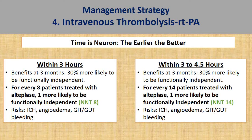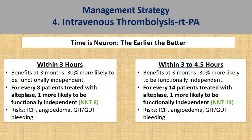This slide echoes the mantra that 'time is neuron' — the earlier the reperfusion treatment, the better the outcome. If patients receive reperfusion treatment within the first three hours, the number needed to treat (NNT) is eight, meaning for every eight patients treated with alteplase, one is more likely to be functionally independent. If thrombolysis is given between three and four and a half hours, the NNT increases drastically from 8 to 14.